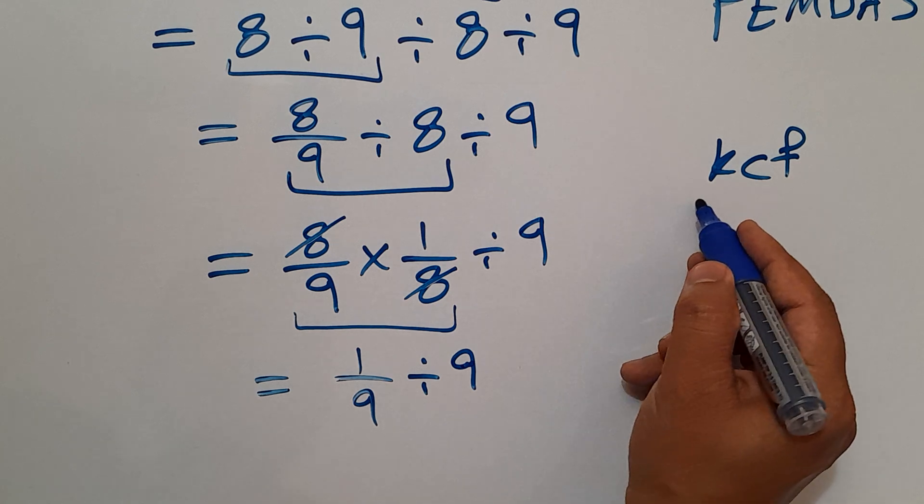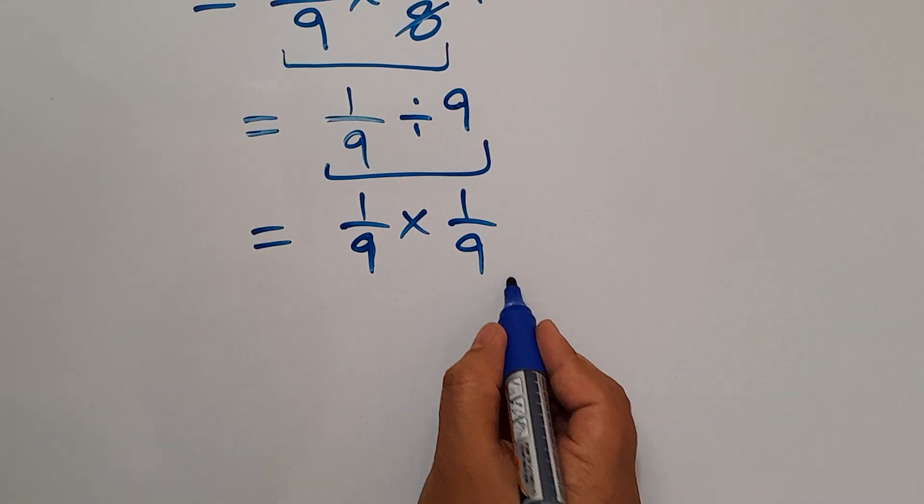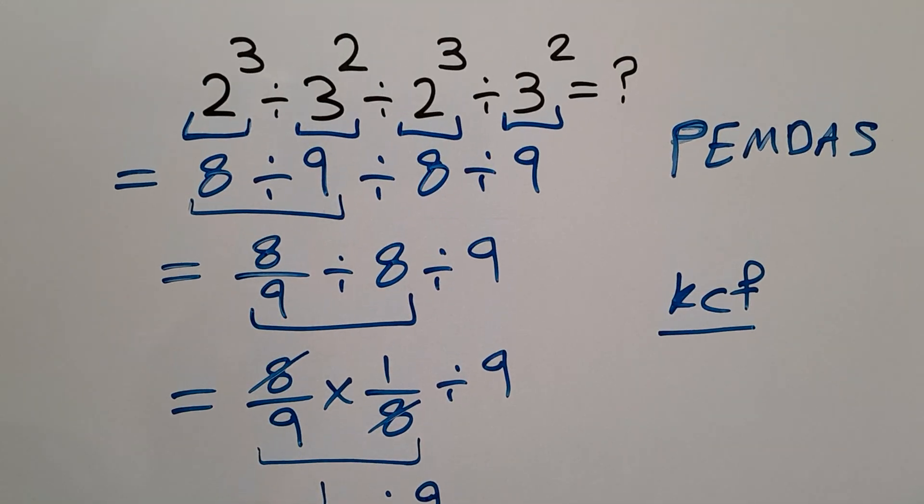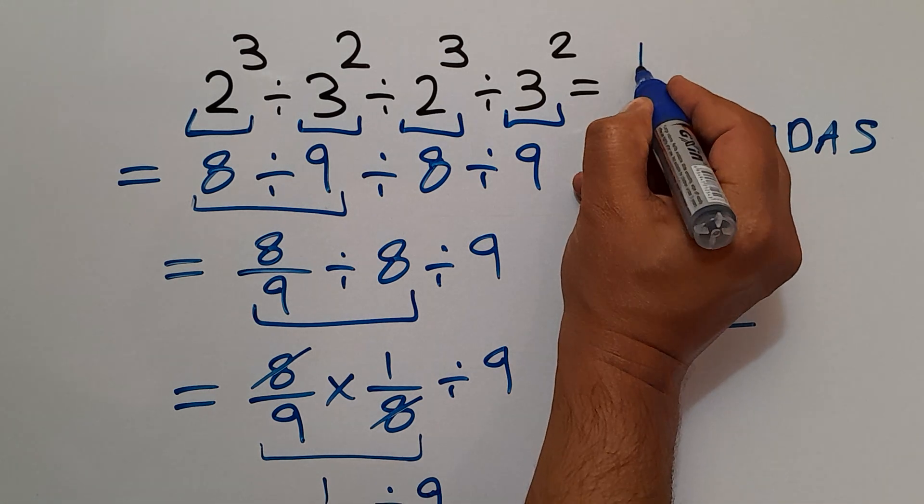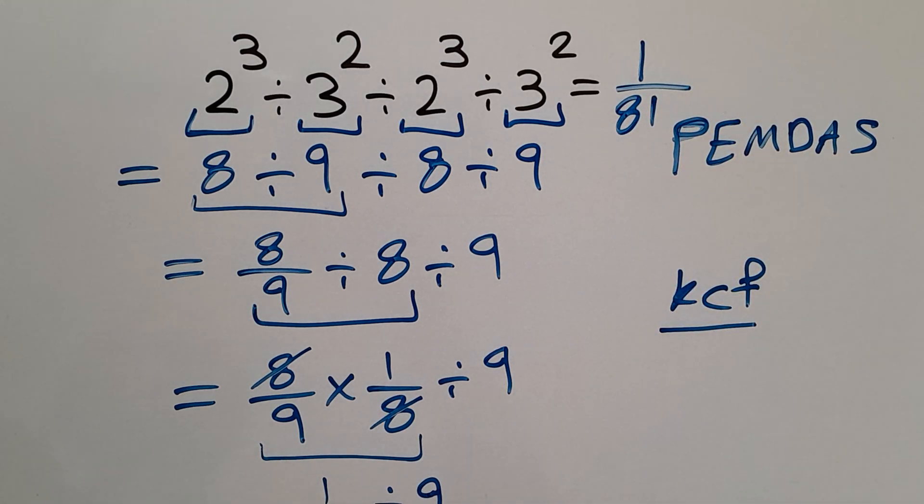And again, according to the KCF rule, 1 over 9 divided by 9 can be written as 1 over 9 times 1 over 9. And this is equal to 1 over 9 times 9, which equals 81. So our final answer to this problem is 1 over 81. Thank you.